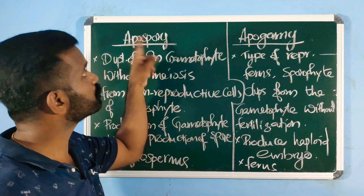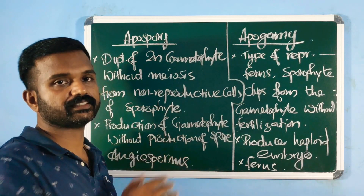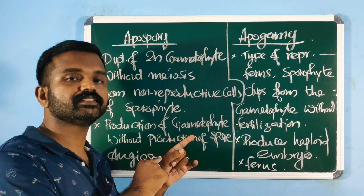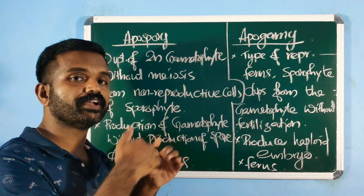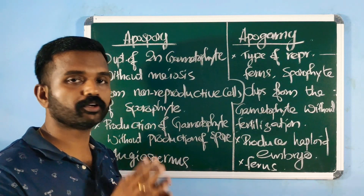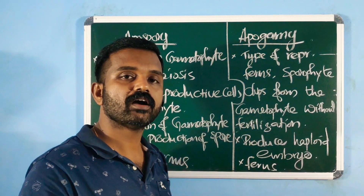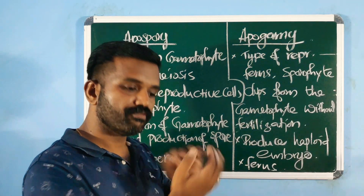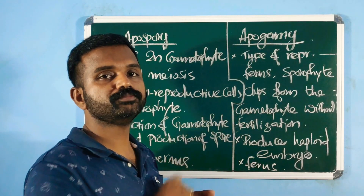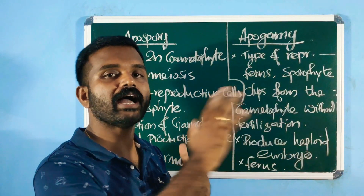To remember the difference: in apospory, development takes place from the sporophyte — a diploid gametophyte is formed because there is no meiosis. In apogamy, development takes place from the gametophyte — a sporophyte forms without fusion, so it is haploid.